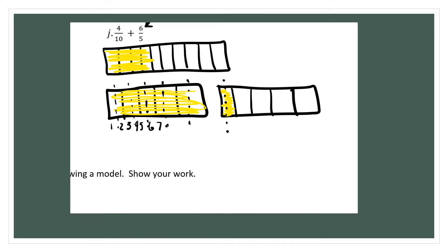5, 6, 7, 8, 9, 10, 11, 12. So I have 12 tenths plus 4 tenths. Now they're in the same denominator. I can add them together easily and end up with 16 tenths.